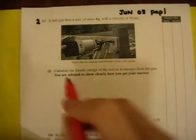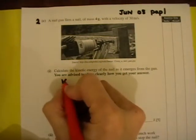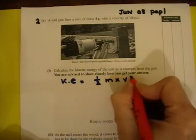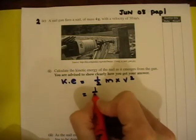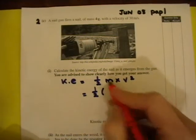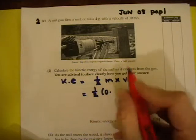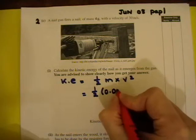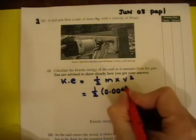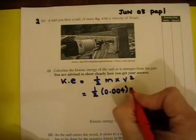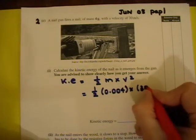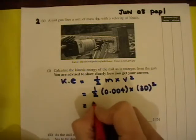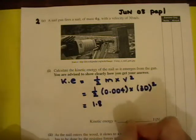Calculate kinetic energy. So kinetic energy, the equation is half times m times v squared. And this is where you have to be careful. Your mass has to be changed into kilograms, so you're dividing it by 1,000, and it becomes 0.004. And you're multiplying by v squared, which is 30. Don't forget to square it. Your answer comes out to be 1.8, and that's in joules.